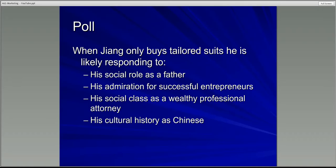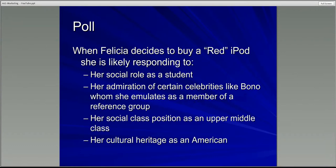You can look online for some comments on your answers. Here's one more: when Felicia decides to buy a red iPod — where some of the money goes to AIDS charity — she is likely responding to her social role as a student, her admiration for certain celebrities like Bono as a member of a reference group, her social position as upper middle class, or her cultural heritage as an American. Think about that and make a selection.